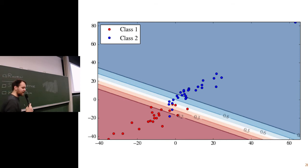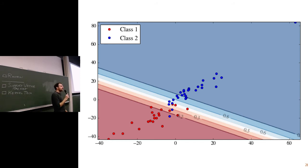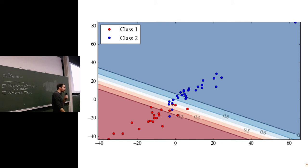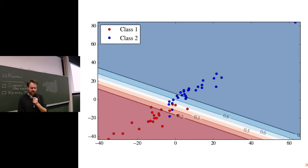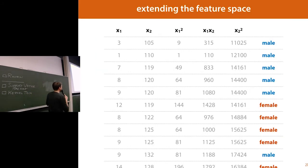So we have linear classifiers with two different loss functions: least squares and logistic regression with cross-entropy. After the break we'll talk about the third loss function. But first: why do we focus on linear classifiers when most data is not linearly separable? Because we can take them as a starting point and extend our feature space — project the features into a higher-dimensional feature space to make the classifier non-linear.